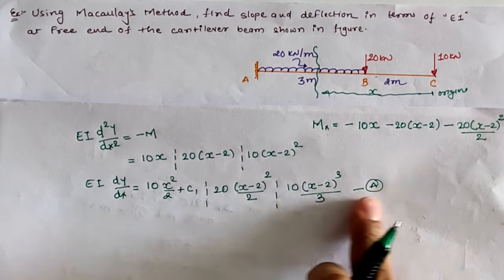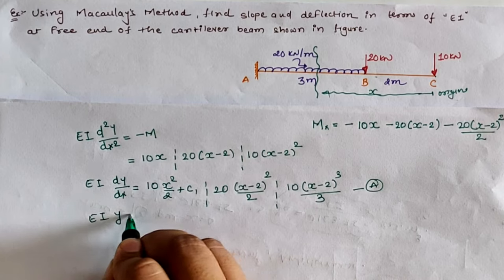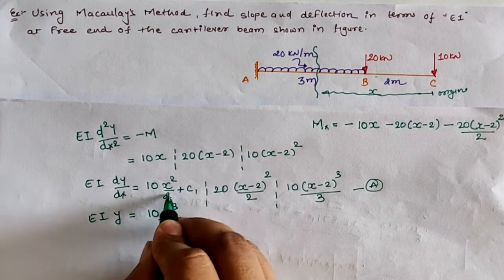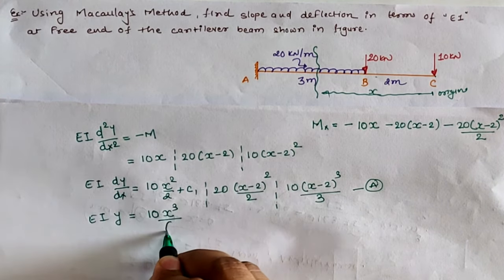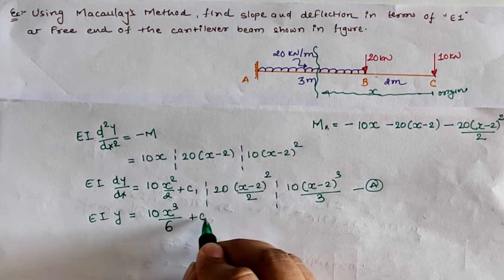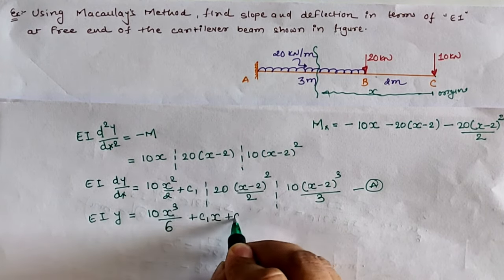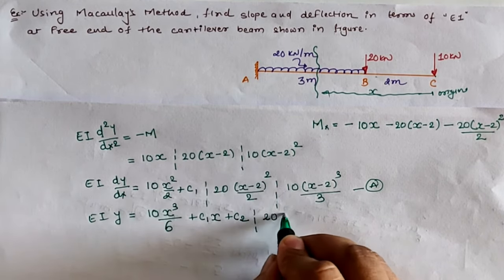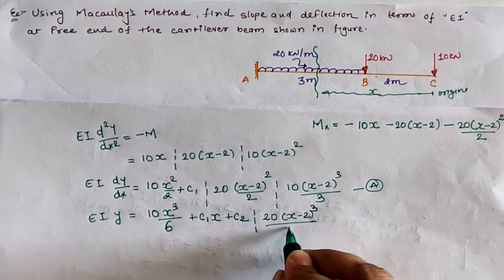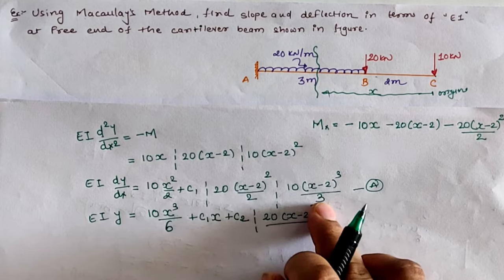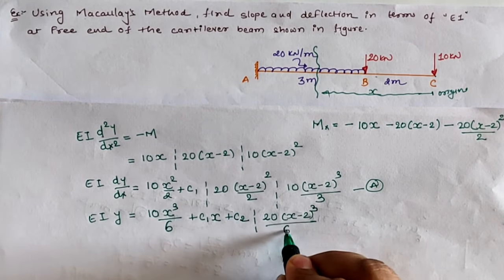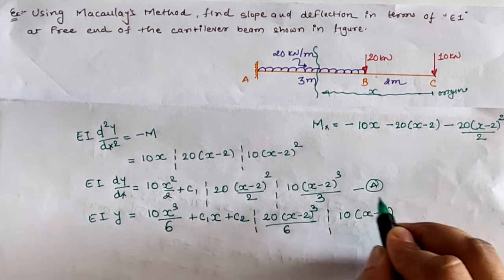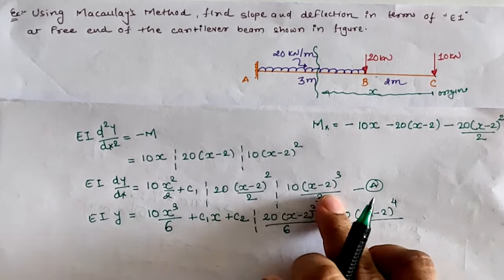Now again integrating this equation we will have EI into y as deflection: 10x squared integrates as x cubed by 3, and with denominator 2 that gives 10x cubed by 6, plus C1 integrated as C1·x, plus second integration constant C2. The 20(x minus 2) squared term integrates as (x minus 2) cubed by 3, with denominator 2 giving divided by 6. The next value 10(x minus 2) cubed integrates as (x minus 2) to the 4th by 4, with denominator 3 giving divided by 12.